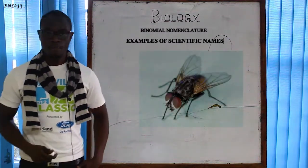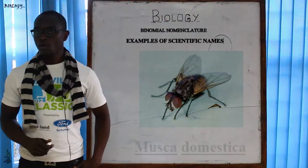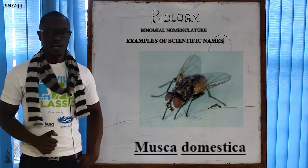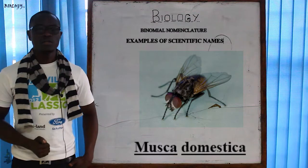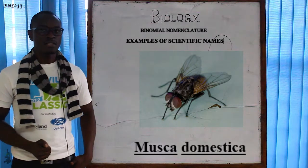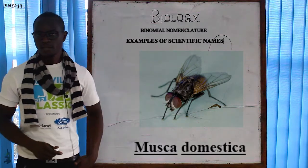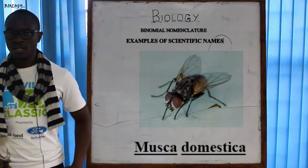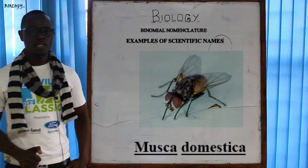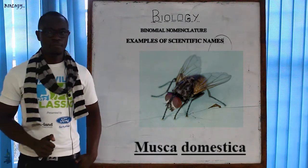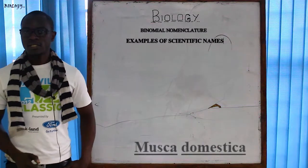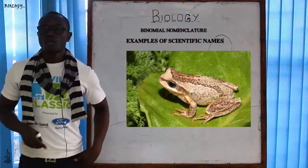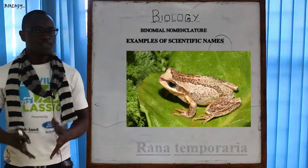Now let's look at the common housefly. The scientific name of the common housefly is Musca domestica — Musca is the genus name while domestica is the species name.